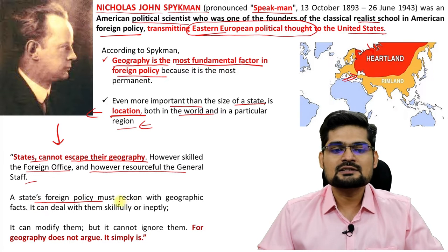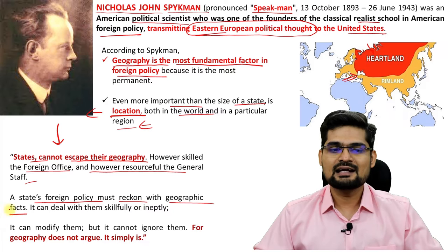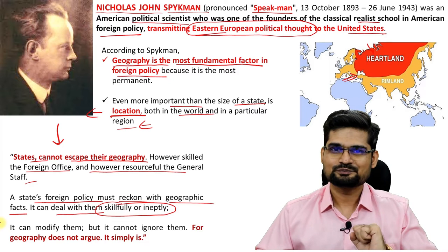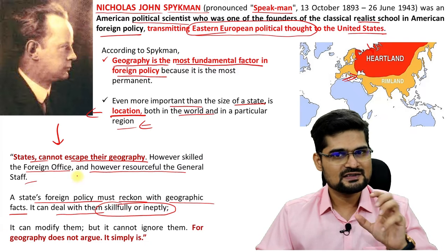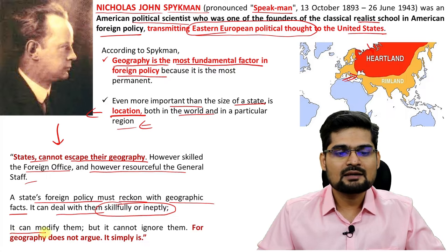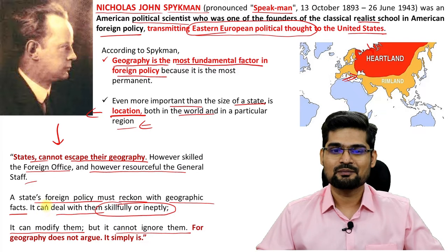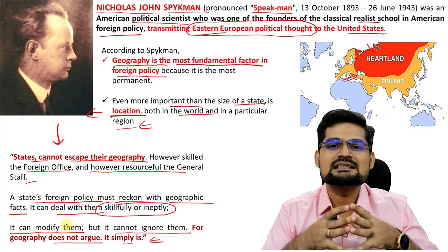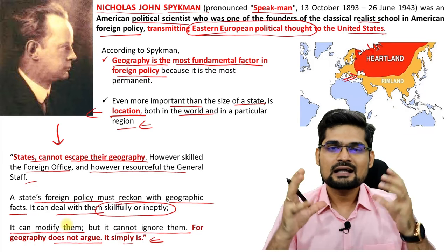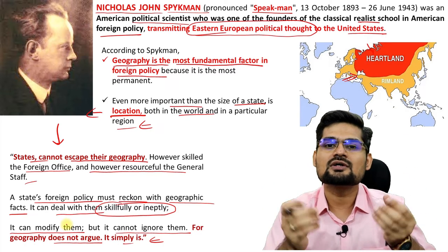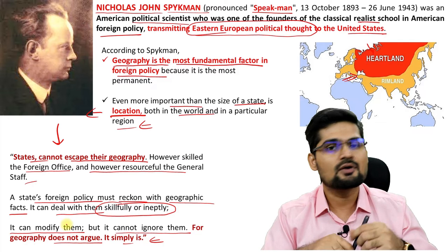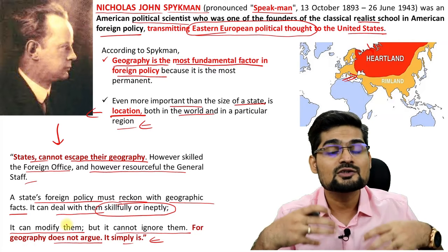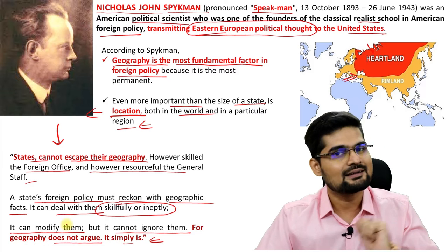States' foreign policy must reckon with geographical facts, and it can deal with them skillfully or ineptly — that depends upon the states. It can modify them, but it cannot ignore them, for geography does not argue — it simply is. In these statements of Speakman, you can clearly see it is a theory purely based on geographical and locational factors being the most important in terms of any decision in geopolitics, power alliances, and control over the world.